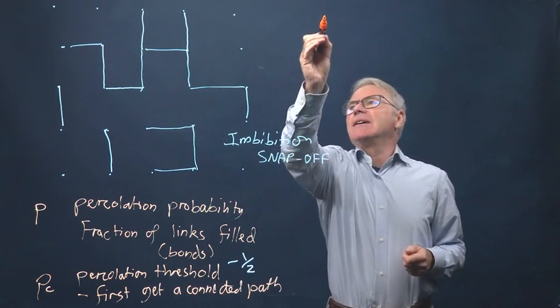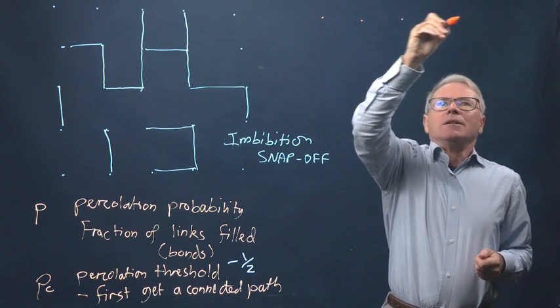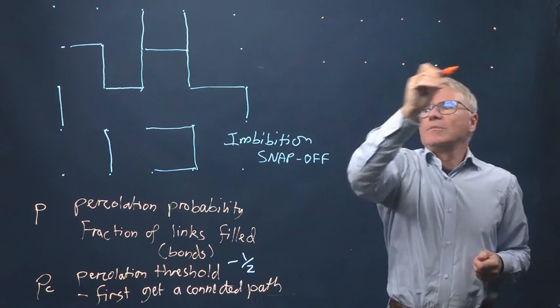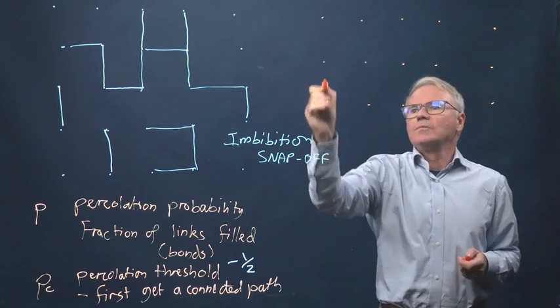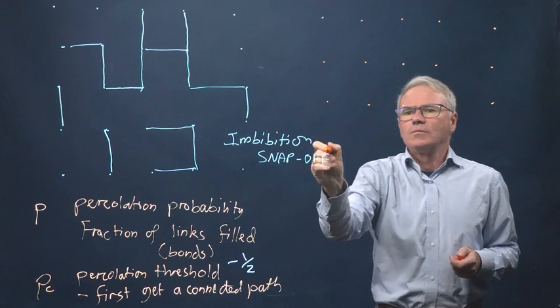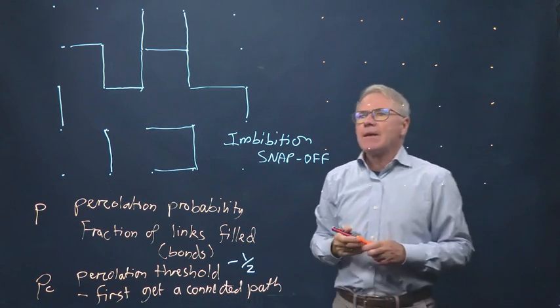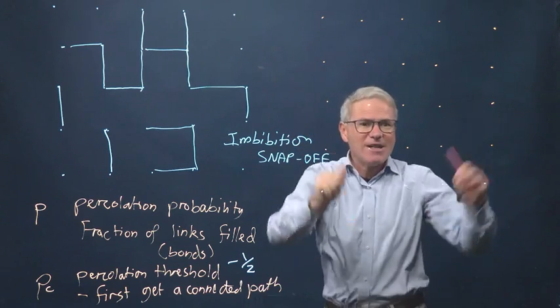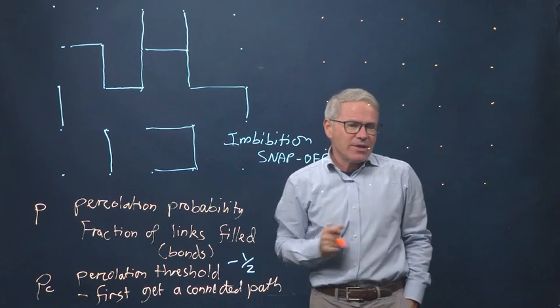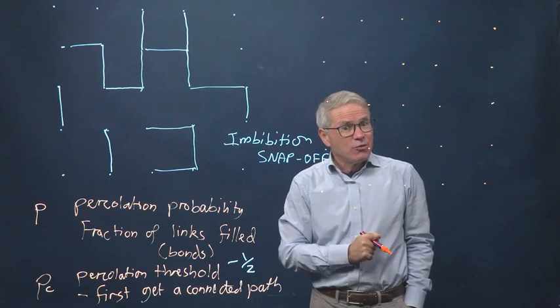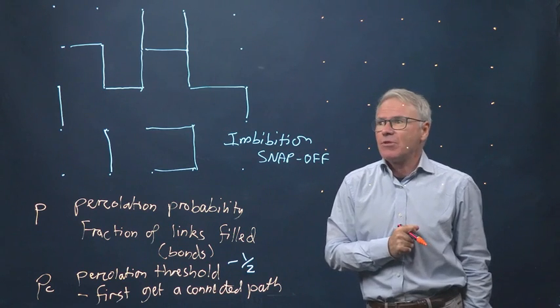Let's reproduce exactly the same pattern here, but in a different colour. So this is the same grid, maybe not exactly the same, but we're trying to do it. Now let's consider drainage. Drainage we described as an invasion percolation process.